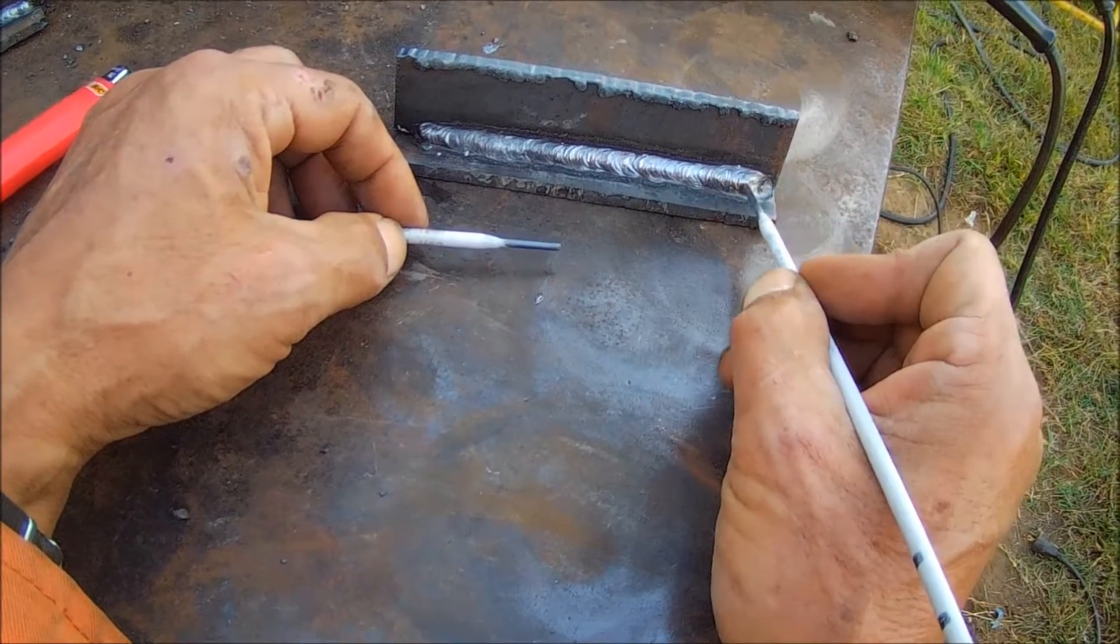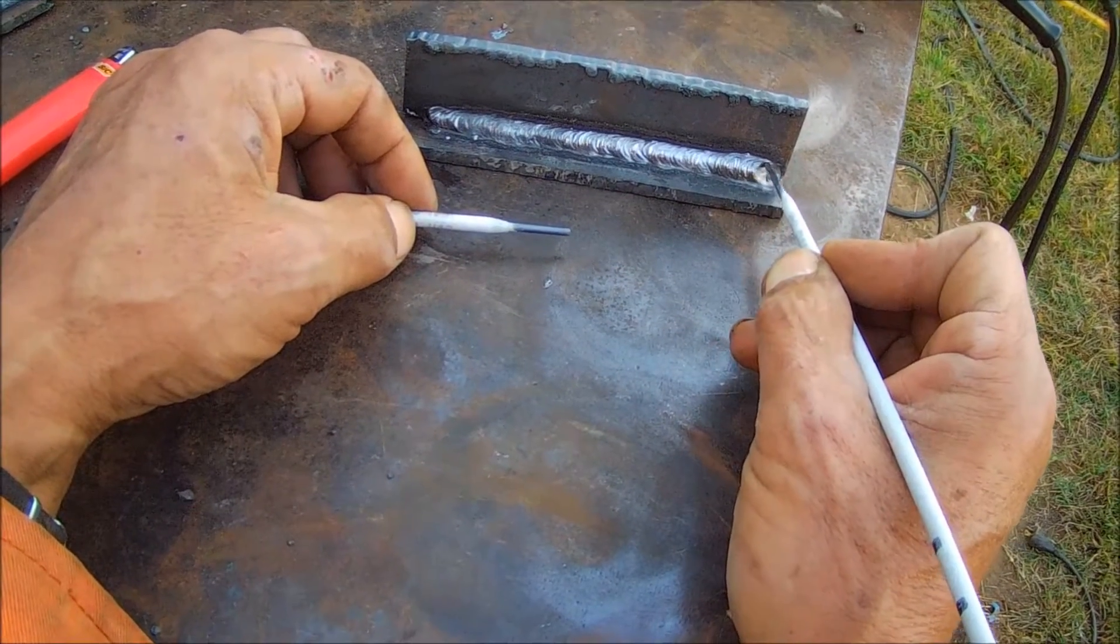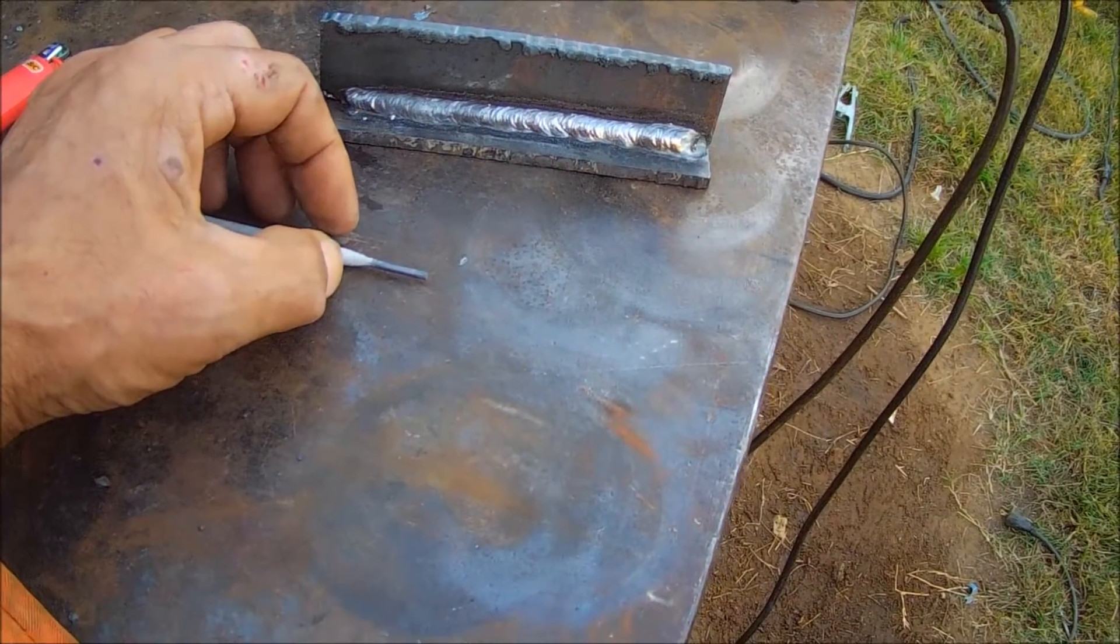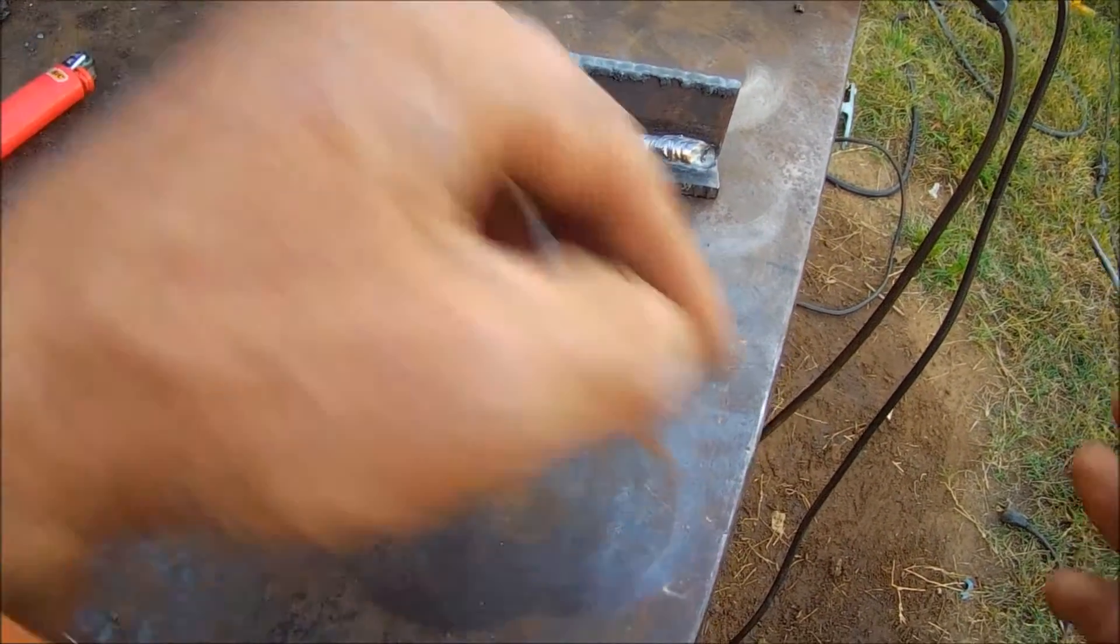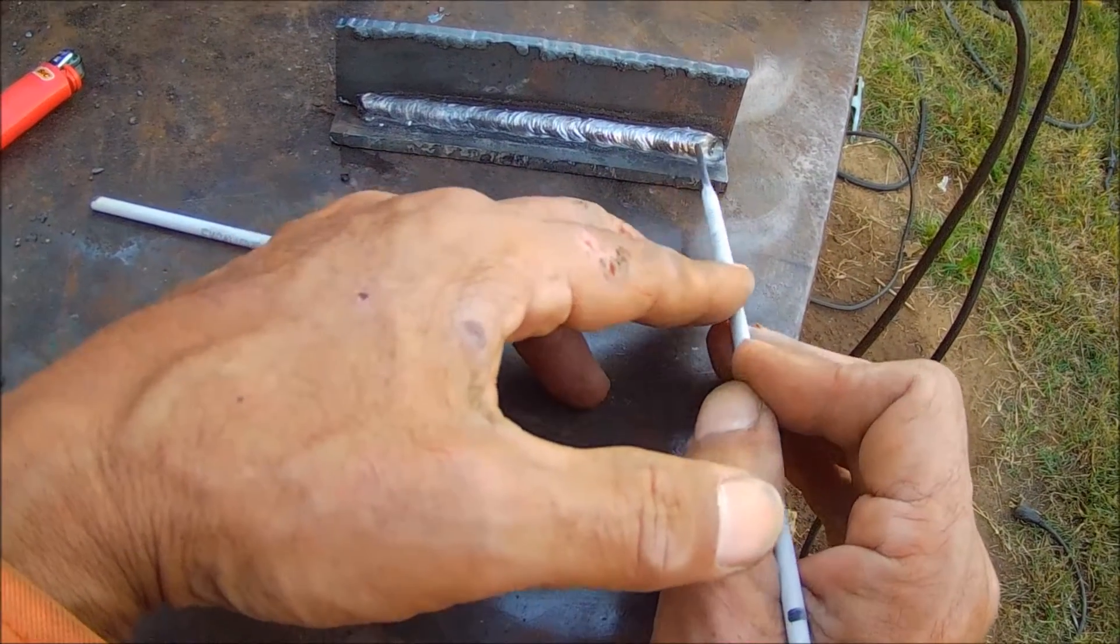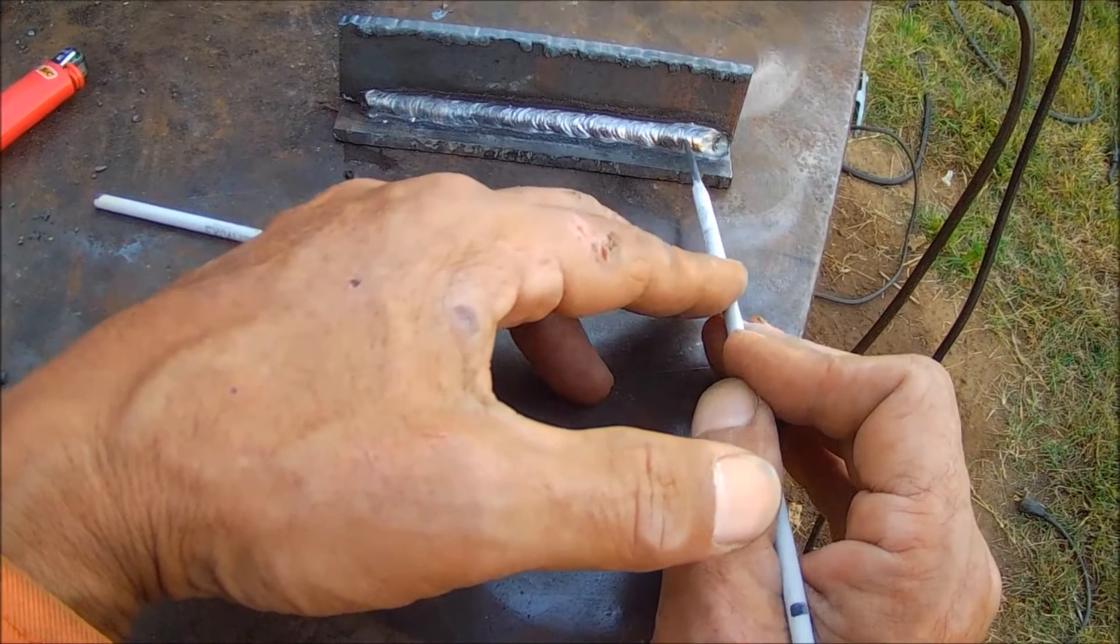But there you see what we've got. Now, another thing you'll notice when you get up here near the end of the plate, you're going to see arc blow. And arc blow, all it is, is with a DC rod, you've got a magnetic field, I guess, on both sides of that rod. I've seen explanations.